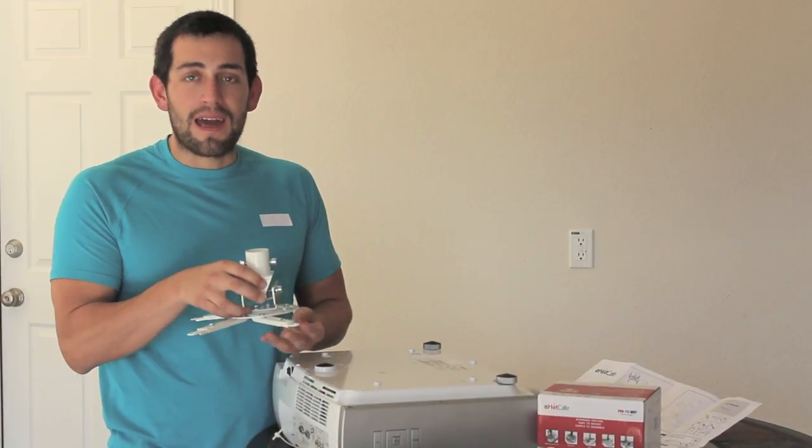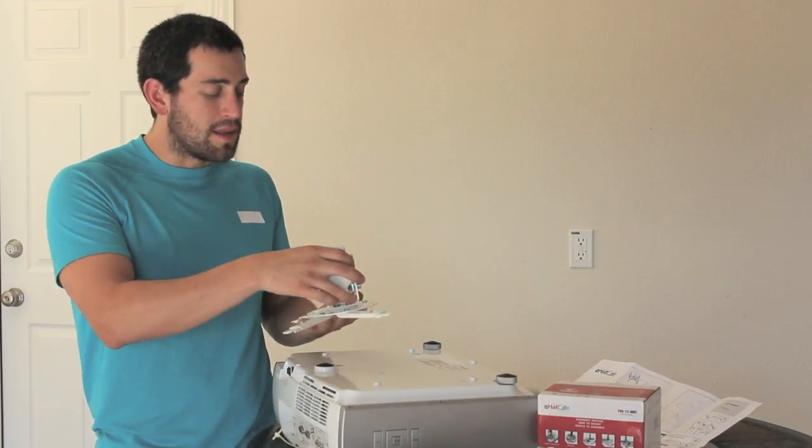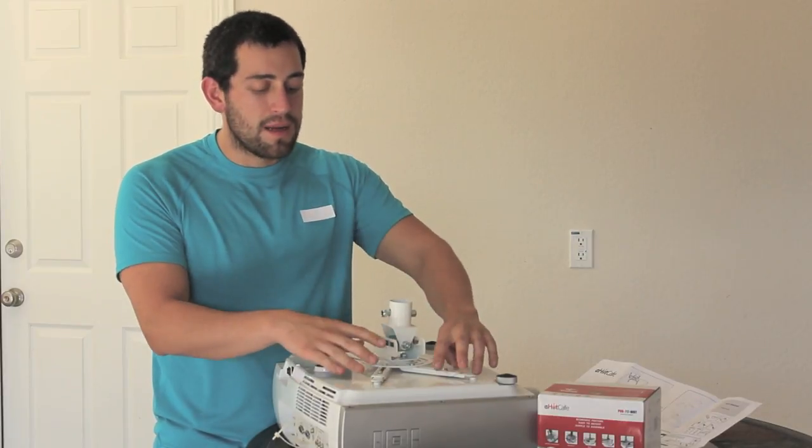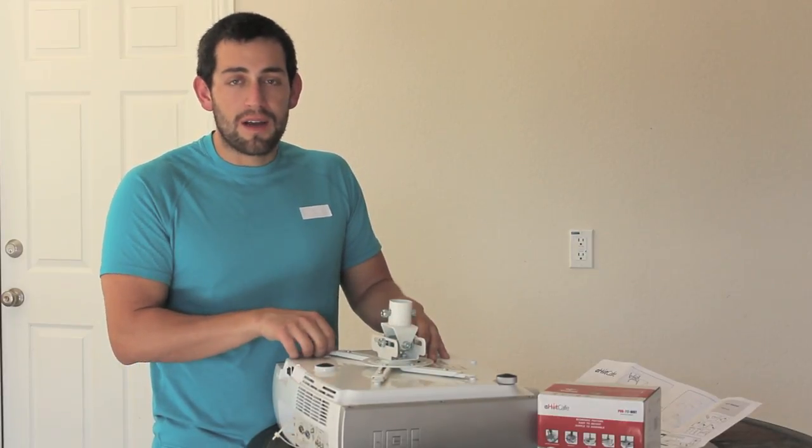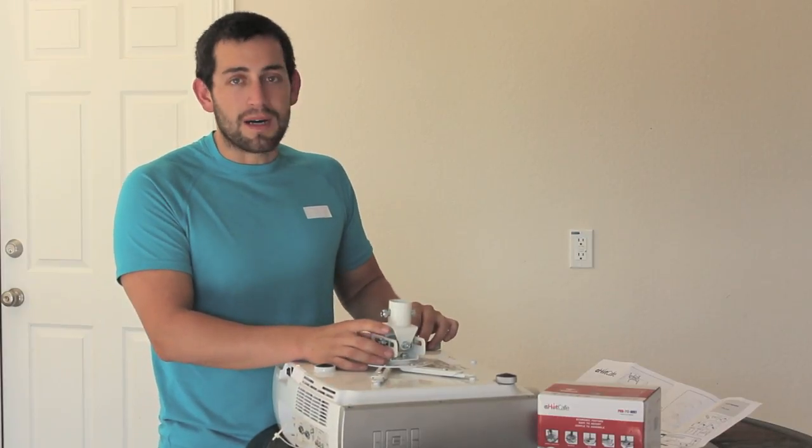When installing the E-Hawk Cafe 717 model, the first thing you want to do is make sure you put it in the center of the projector. Make sure you line up the screws to where they need to be screwed in. Depending on the size of your projector, you might need to use the adjustments and extenders that come provided in the box.